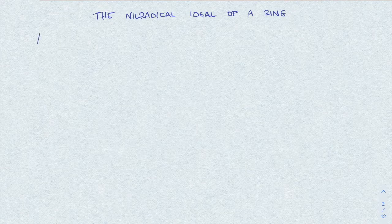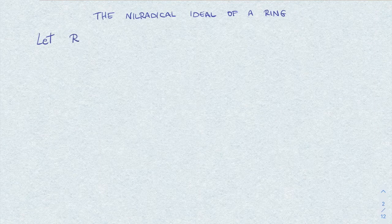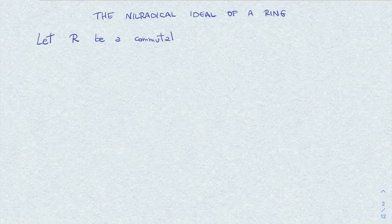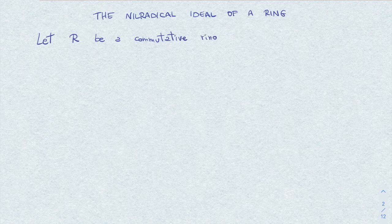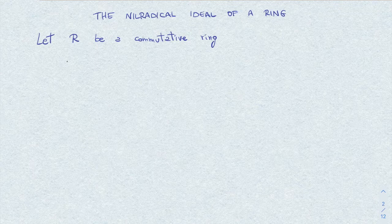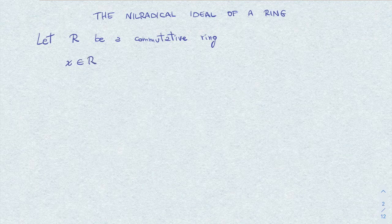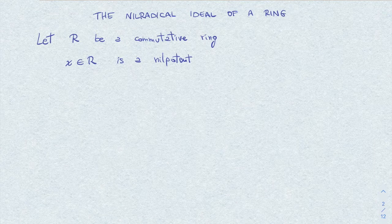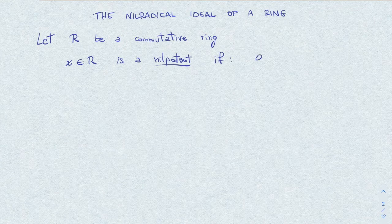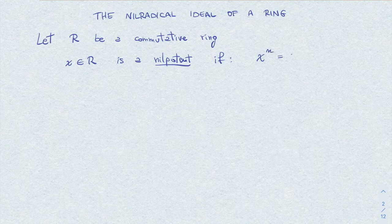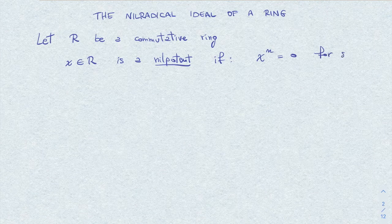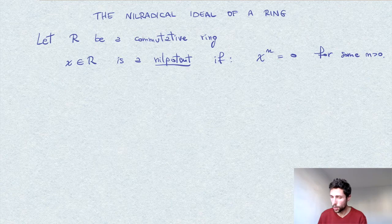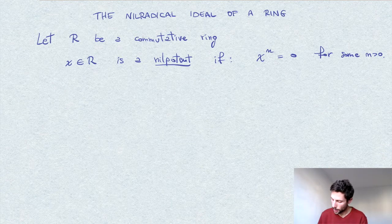The setting is the following: we have a commutative ring R. An element x in R is nilpotent if x to the power n equals zero for some n. What I want to show is that the set of nilpotents is an ideal.